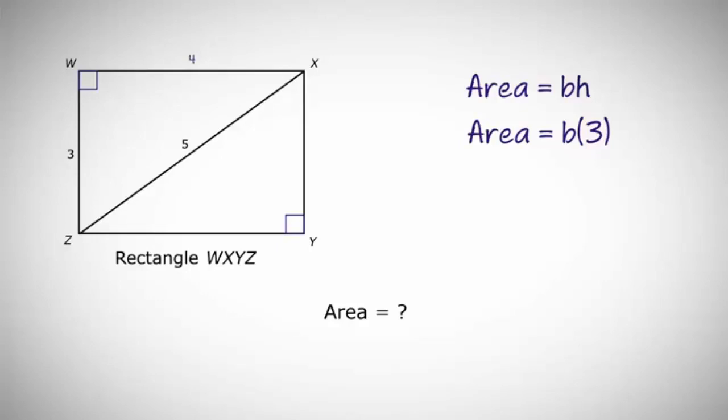Now that we know that, we can multiply our base times our height, 4 times 3, to give us an area of 12.